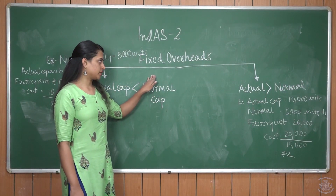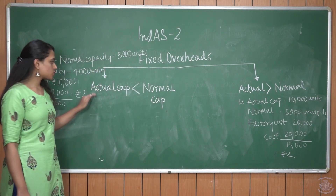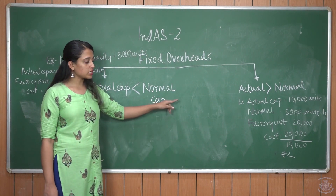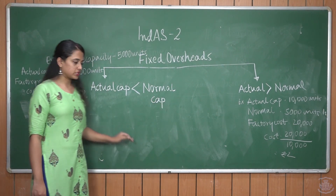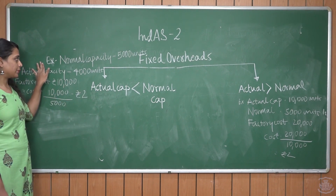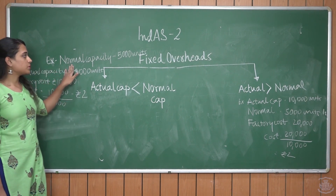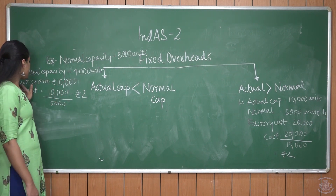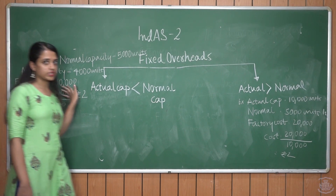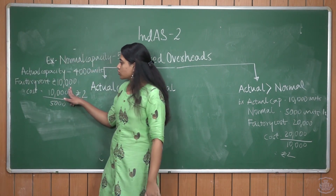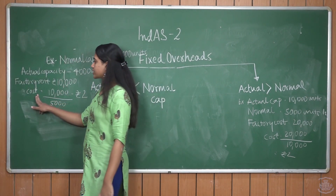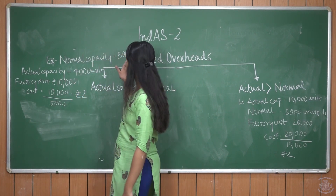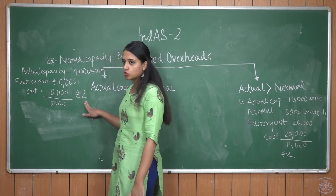Absorption of fixed overheads can be of two types: where actual capacity is less than normal capacity, or actual capacity is greater than normal capacity. In the first case, consider: normal capacity is 5,000 units, actual capacity is 4,000 units, and factory rent (the fixed overhead) is Rs. 10,000. The cost per unit absorbed into inventory is Rs. 10,000 divided by normal capacity of 5,000, which gives Rs. 2 per unit.